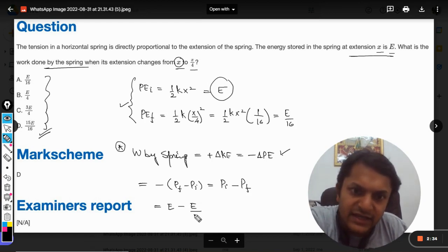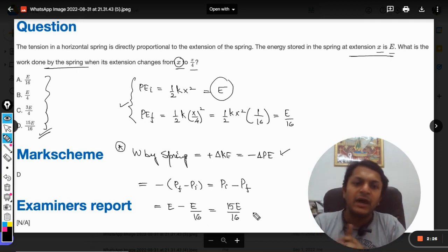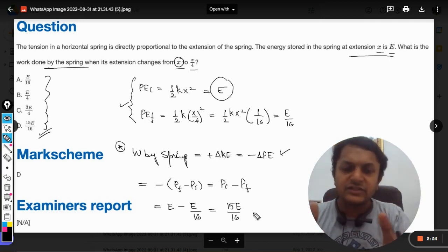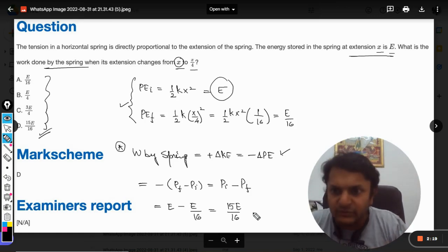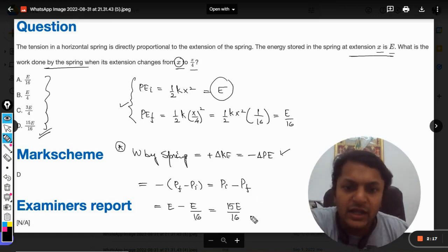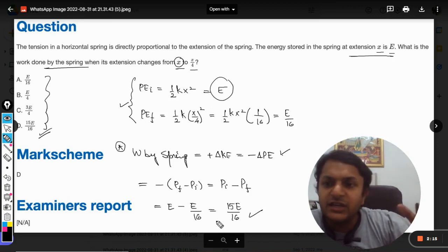minus E divided by sixteen, so it will become 15E by sixteen. I'm taking calculation in my mind, I am creating this calculation by myself. I hope you would be able to do it. If still you are not able to do it, please mention in the comment section and I will explain. But anyways, it is 15E by sixteen.